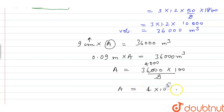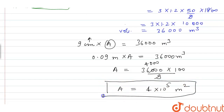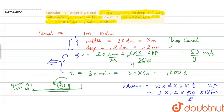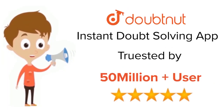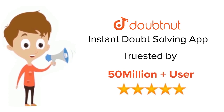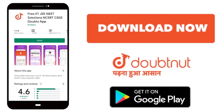The area that gets irrigated is 4 × 10⁵ square meters, given 9 centimeters of standing water, these canal dimensions, a 30-minute time period, and this flow velocity. For class 6 to 12, IIT JEE, and NEET level, trusted by more than 5 crore students — download the DoubtNet app.